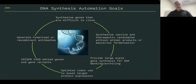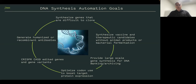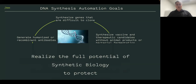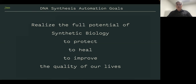Recombinant antibodies are also very important — how can we humanize them to create good amounts in mammalian cells? This is just a number of areas that DNA synthesis automation can really improve. And we're not talking about a factor of 2 or 10 — we're looking at factors of 100 or above in terms of speed, efficiency, and accuracy. In short, we want to realize the full potential of synthetic biology: to protect through vaccines, to heal through therapeutics, and to improve quality of life.